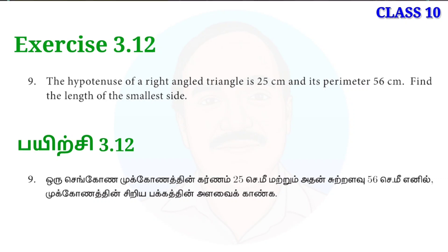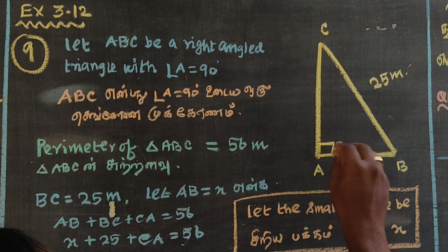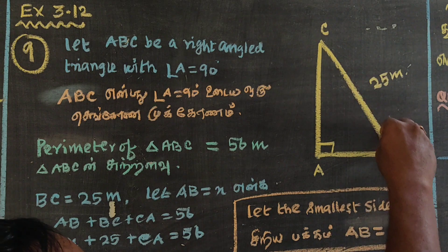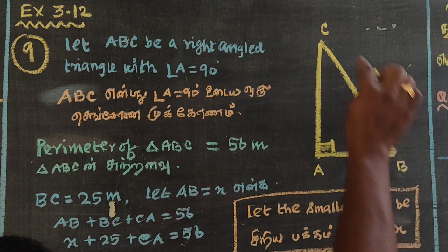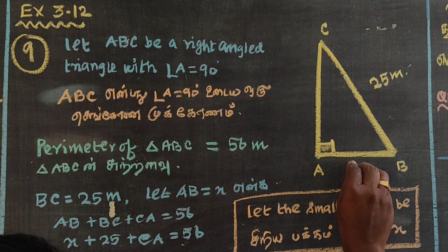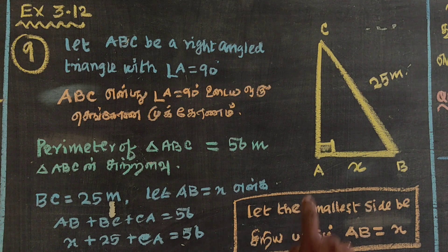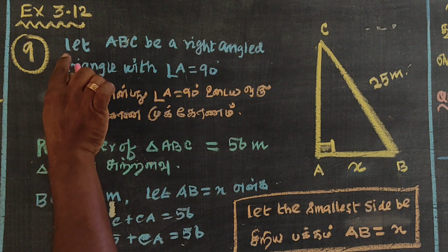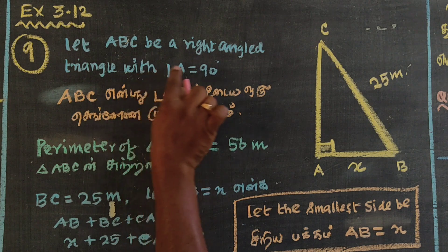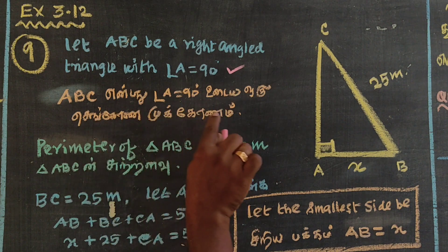I am going to show you the right angle triangle. ABC is a right angle triangle with angle A equal to 90 degrees.